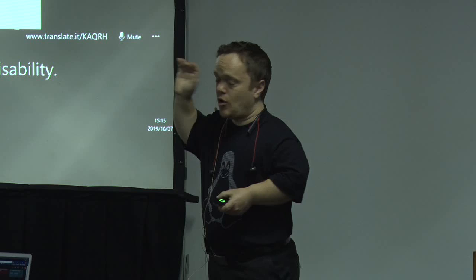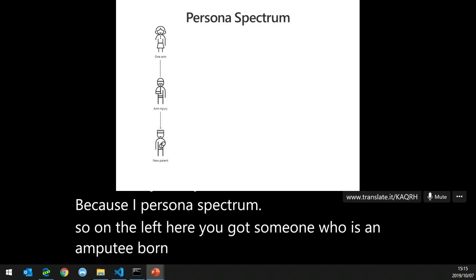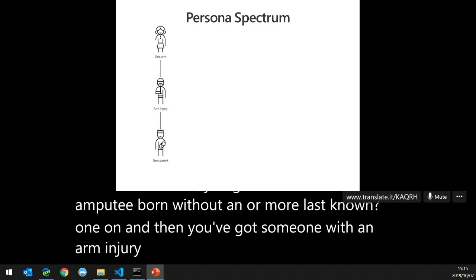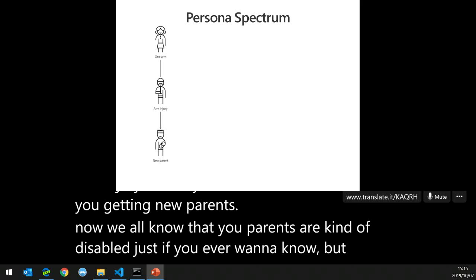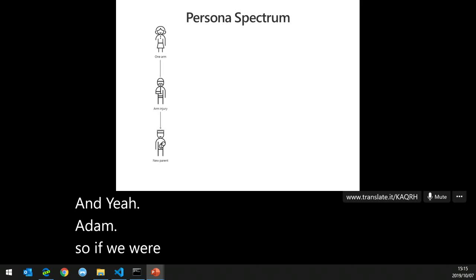Here's our persona spectrum. On the left you have someone who's an amputee — born without an arm or lost one. Then someone with an arm injury from a motorcycle or car crash. Then a new parent — we all know new parents are kind of disabled, both financially and physically. If we were to design only for the person with one arm and go to your manager, you could never justify it financially — that population is only 26,000 in the US disability statistics.